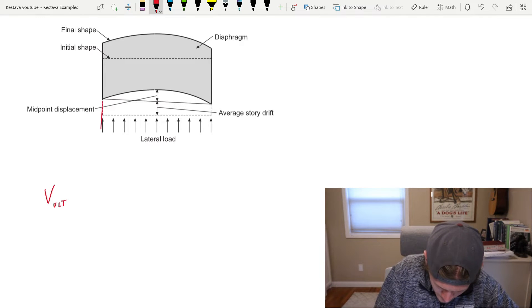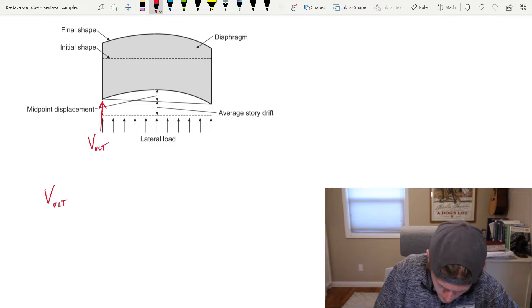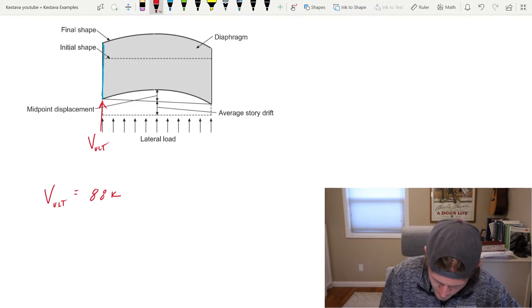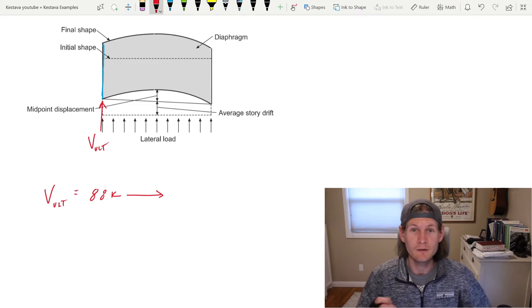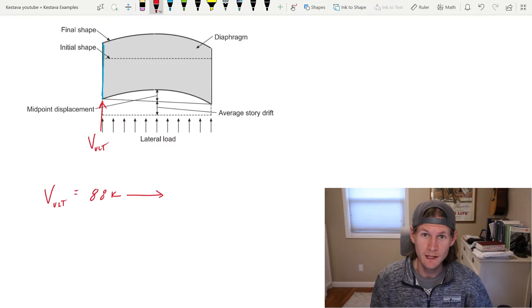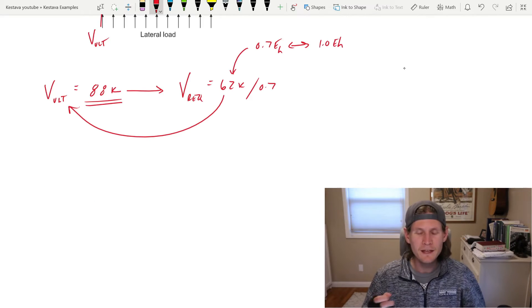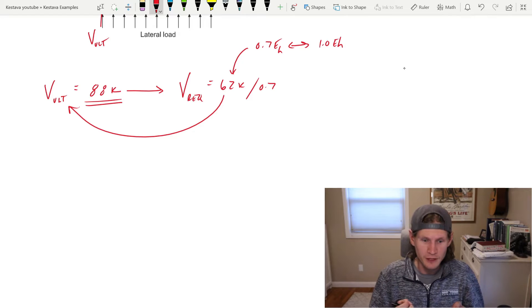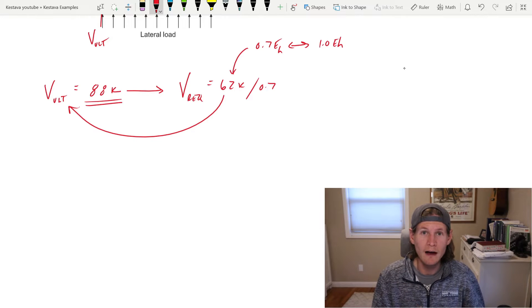V ultimate along this shear wall, so we're going to be looking in blue, at this shear wall right here was equal to 88 kips. And that's because we need to get to strength level forces when we're determining our deflections and our story drift.